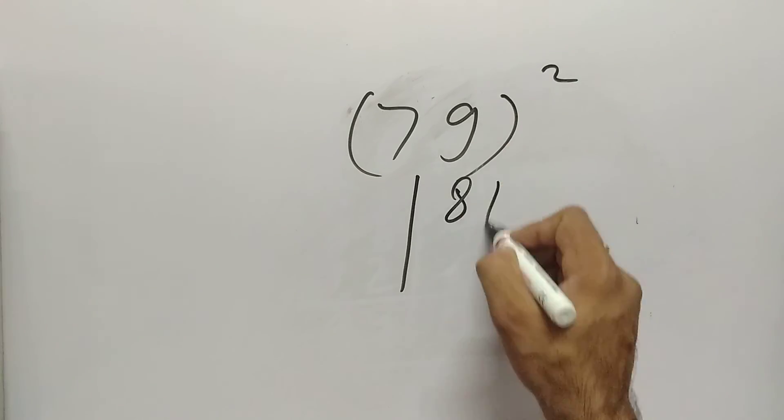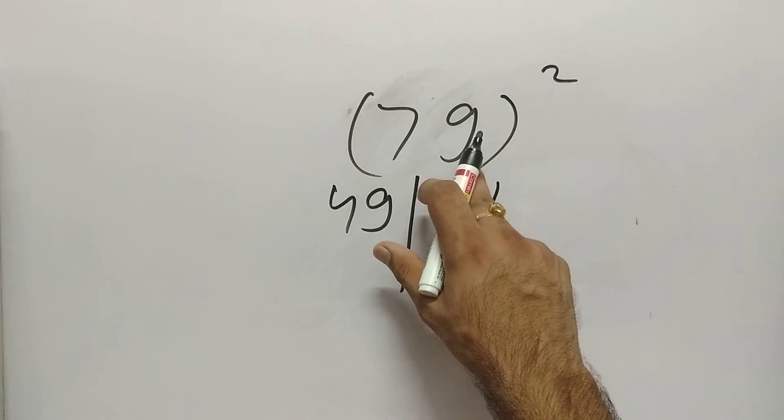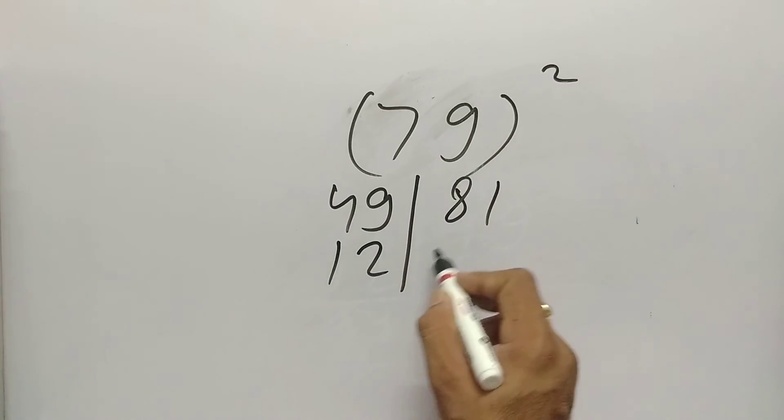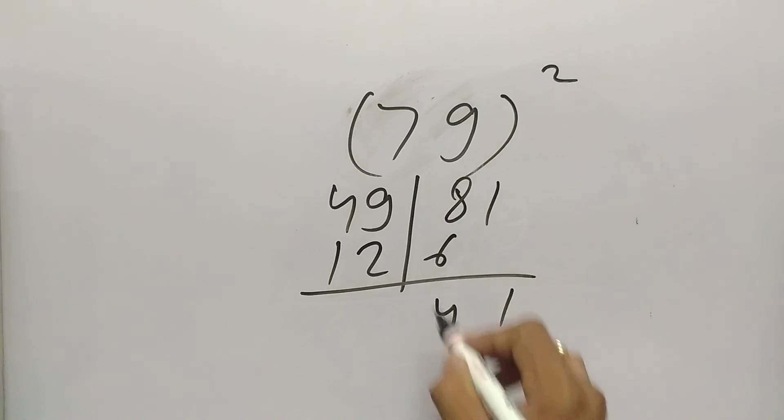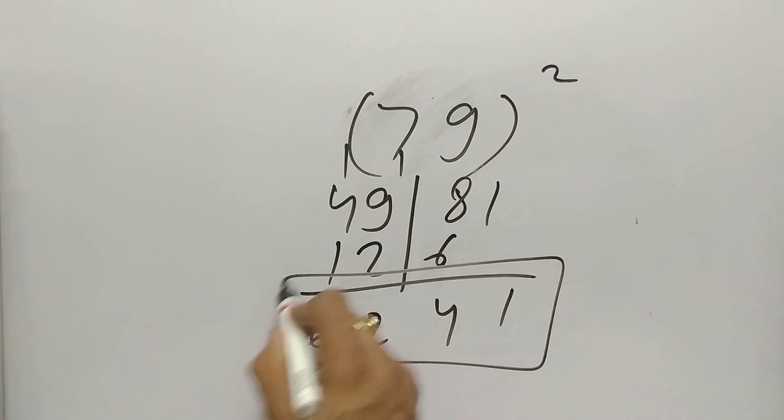9 square is 81, 7 square is 49. After that 7 times 9 is 63, 63 times 2 is 126. So the answer is 10, 12, 4, 5, 6. 6,241.